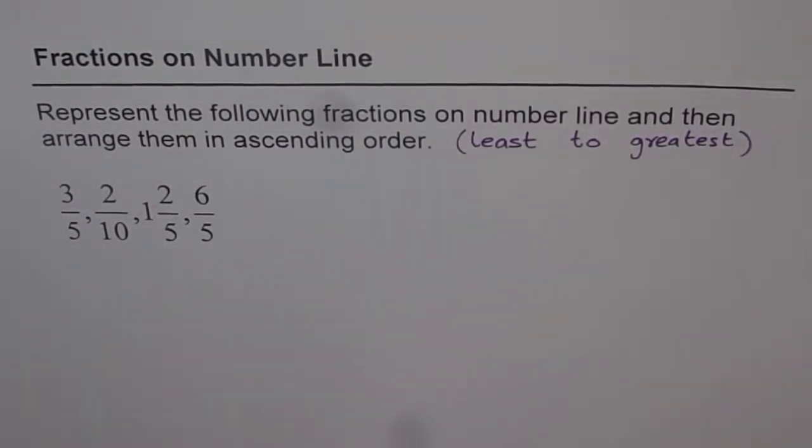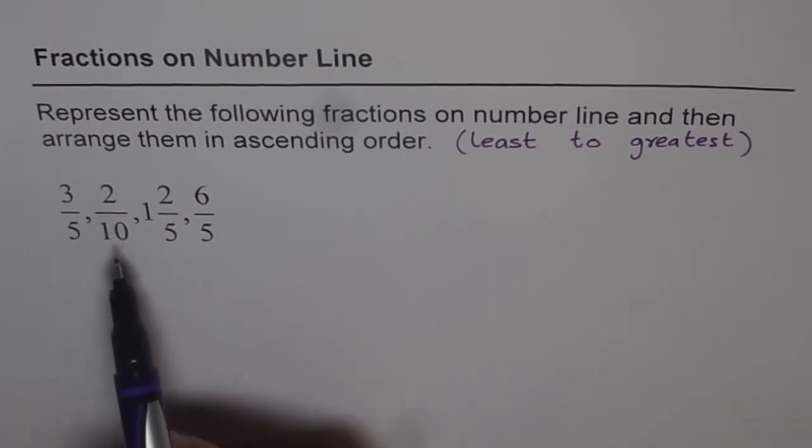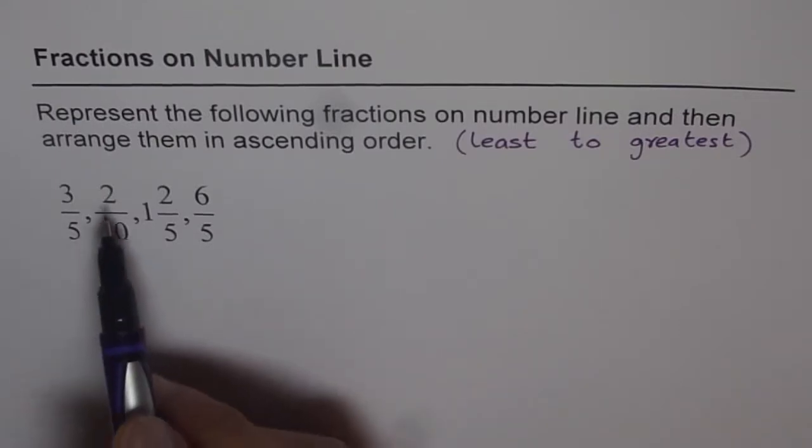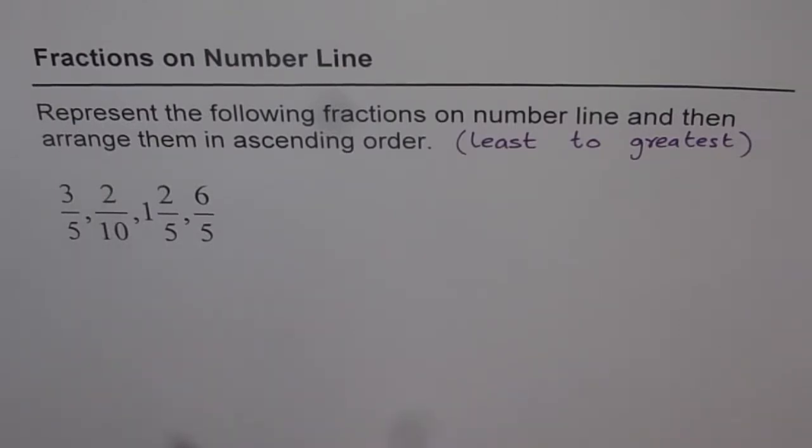Now we are given fractions 3 over 5, 2 over 10, 1 and 2 over 5, and 6 over 5. So you see there are improper fractions and mixed fractions and normal fractions given. And we also note that the denominator is different. For 3 of them it is 5 and 1 we have is 2 over 10. So it is a good idea to write them all with the same denominator.